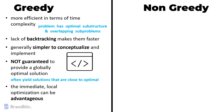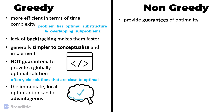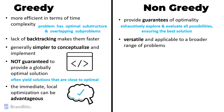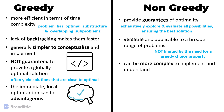The immediate local optimization can be advantageous in certain real-world scenarios. For non-greedy algorithms like dynamic programming, there is a guarantee of optimality, as they exhaustively explore and evaluate all possibilities to ensure the best solution. Non-greedy algorithms are versatile and applicable to a broader range of problems, as they are not limited by the need for a greedy choice property. However, they can be more complex to implement and understand due to their need for managing states and exploring multiple possibilities.